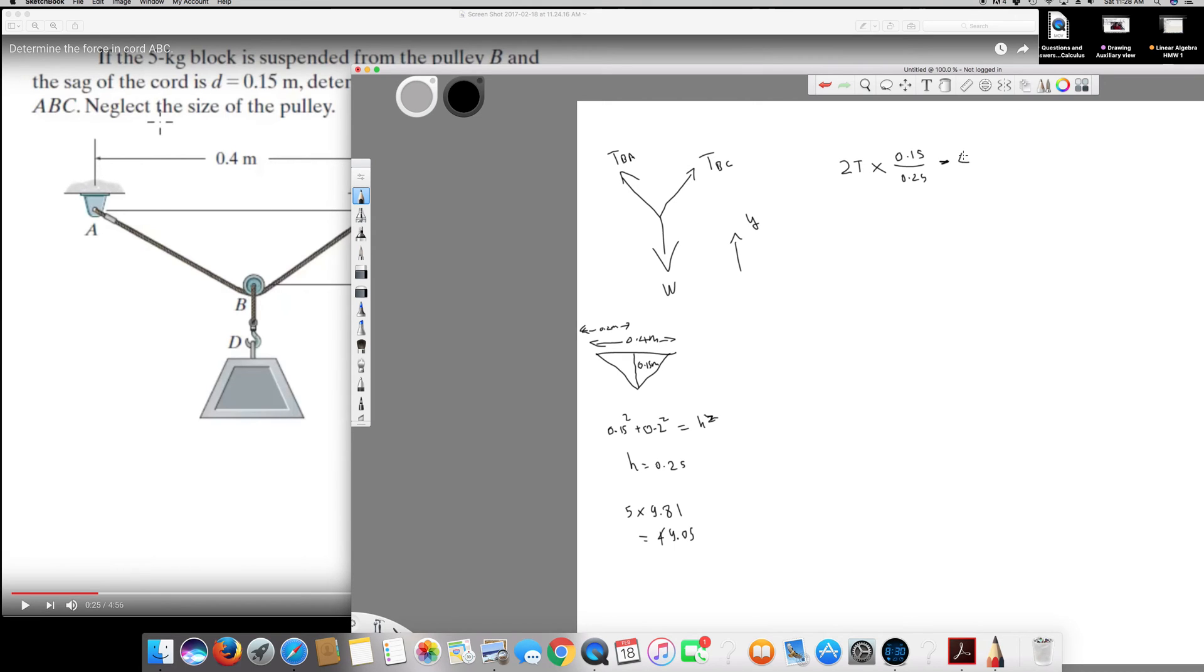So here I put 49.05, and if I solve for this is going to be equal to zero. In statics, delta F_y is equal to zero because it's in equilibrium. So if I solve for T, I will get the answer: 40.9.